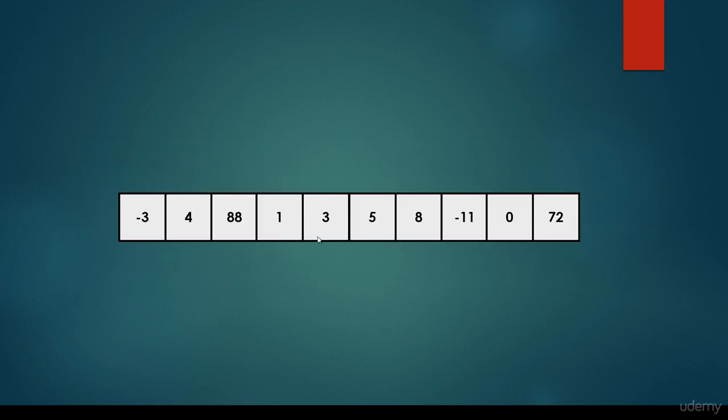For example, we have a one-dimensional array of integers, and as you see, we have some local order. It is a sorted subarray. So maybe an adaptive algorithm can take advantage of this local sorted order.